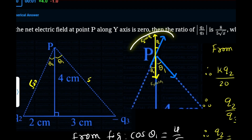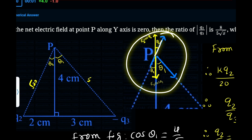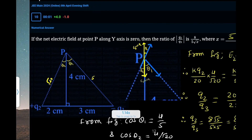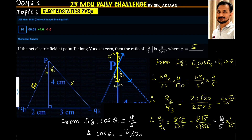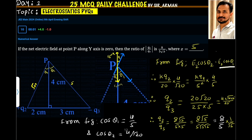The component of E2 along the y-axis is E2 cos theta 2, and the component of E3 along the y-axis is E3 cos theta 1. For the net electric field to be 0, these two components should be equal and opposite. So, E2 cos theta 2 equals E3 cos theta 1.